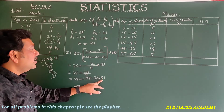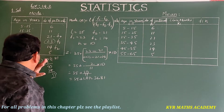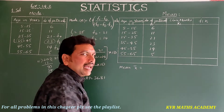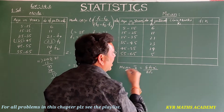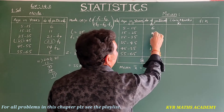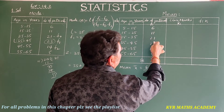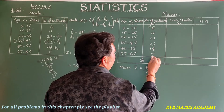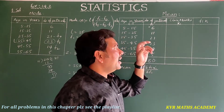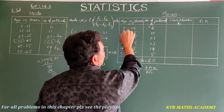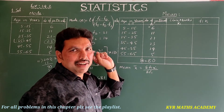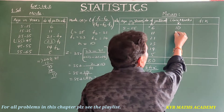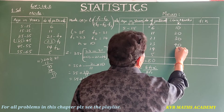The mode comes out to 36.81. This is the mode of the given data. Next, let us find the mean using the direct method. The formula is: x̄ = Σf·xi / Σf. The class marks (midpoints) of each interval are: 10, 20, 30, 40, 50, and 60.